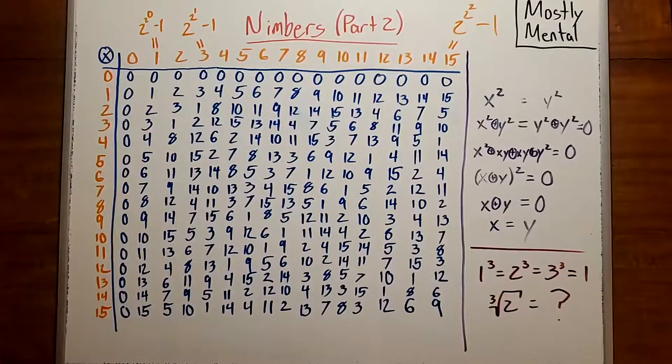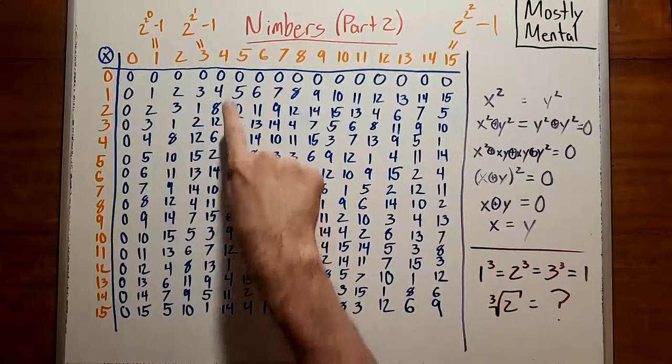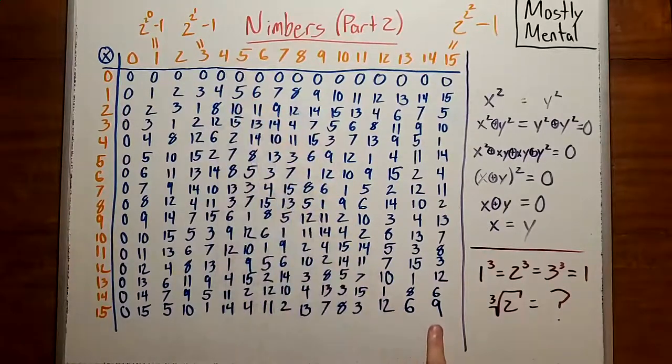For instance, the square root of 3 is 2, or the square root of 7 is 5, or the square root of 9 is 15.